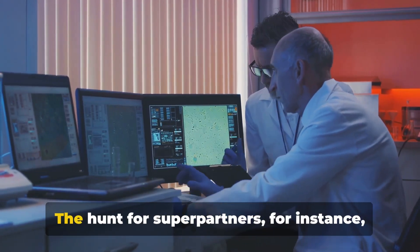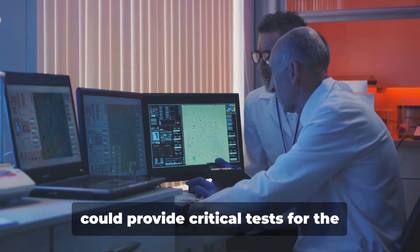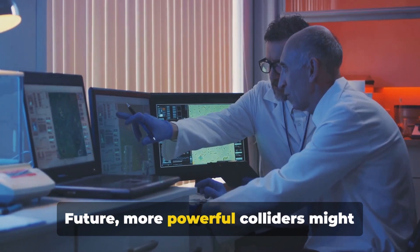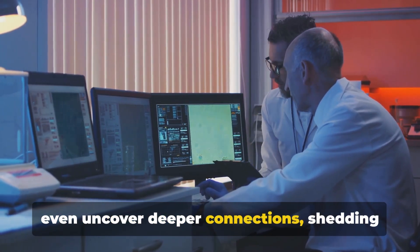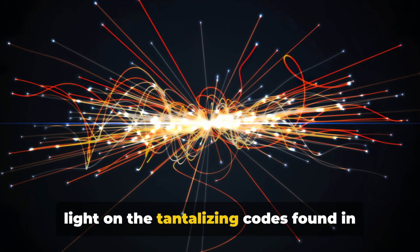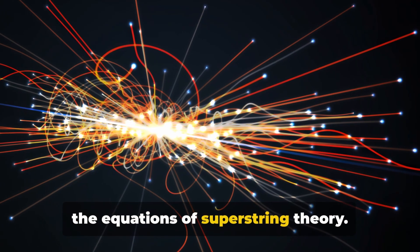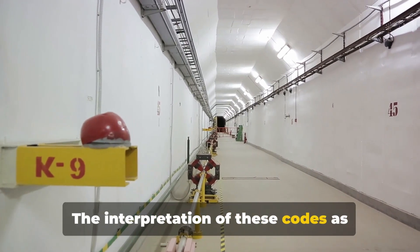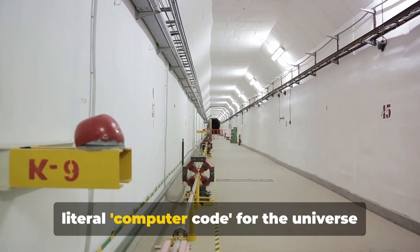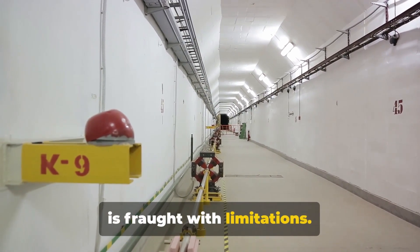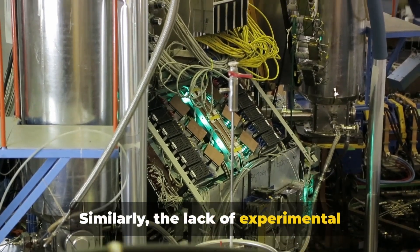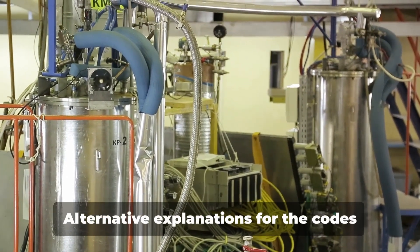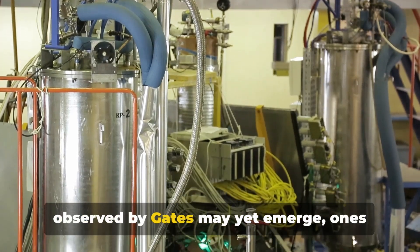On the other hand, we have the experimental searches. The hunt for superpartners, for instance, could provide critical tests for the implications of Gates's findings. Future, more powerful colliders might even uncover deeper connections, shedding light on the tantalizing codes found in the equations of superstring theory. Yet, we must tread cautiously. The interpretation of these codes as literal computer code for the universe is fraught with limitations. Similarly, the lack of experimental evidence for superpartners casts a shadow over the supersymmetry hypothesis. Alternative explanations for the codes observed by Gates may yet emerge, ones that don't necessarily involve supersymmetry.